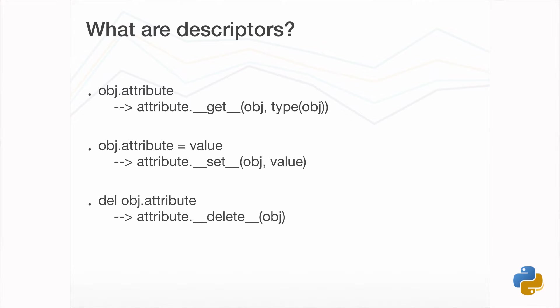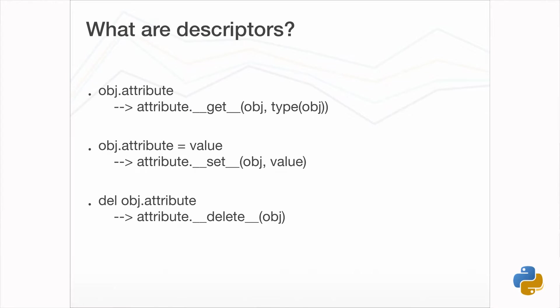A descriptor is an object attribute with binding behaviour — one whose attribute access has been overridden by methods in the descriptor protocol. Those methods are __get__, __set__, and __delete__. If any of those methods are defined for an object, it is said to be a descriptor. This means that if an attribute of a class has any of these special methods, when the corresponding operation is performed on that attribute, those methods will be called instead of the default action, allowing an attribute to override how those operations work.